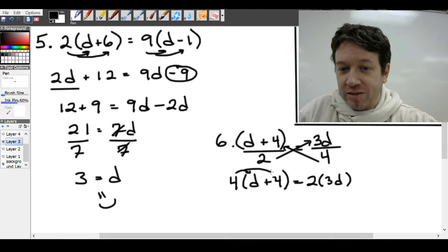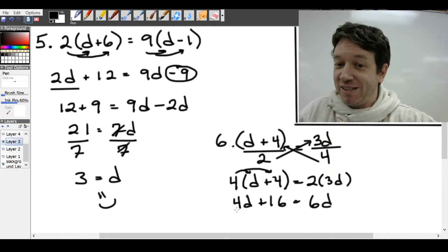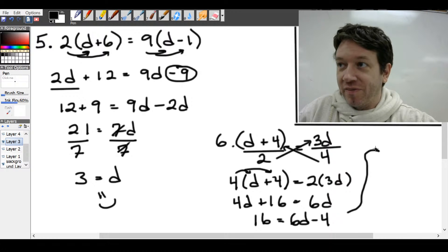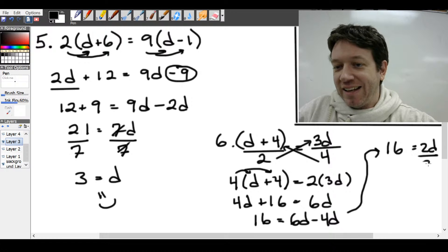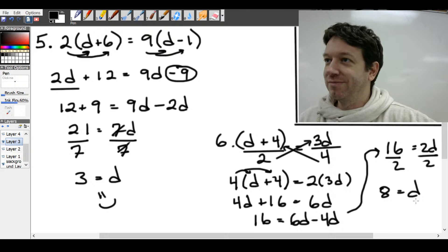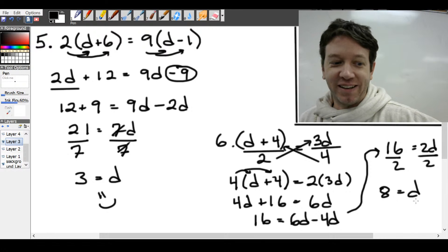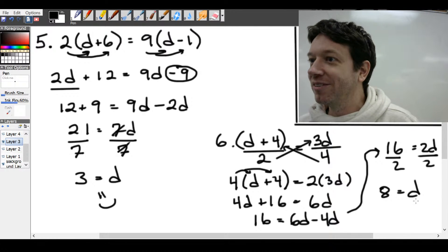Now we can distribute that 4. So we get 4d plus 16 equals, distribute the 2, 6d. Subtract 4d from both sides. We get 16 equals 6d minus 4d. I'm just going to continue up here. And we have 16, forgot the d, equals 2d. And then divide both sides by 2. So we get 8 equals d. Hope everyone can hear me better. I'm using different equipment from the last live, so I hope it's better.